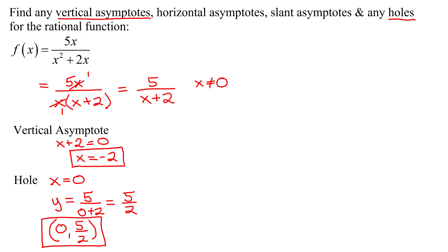Next, we need to work on horizontal asymptotes and slant asymptotes. To find these, we need to know the degree of the polynomial in the numerator and the degree in the denominator.